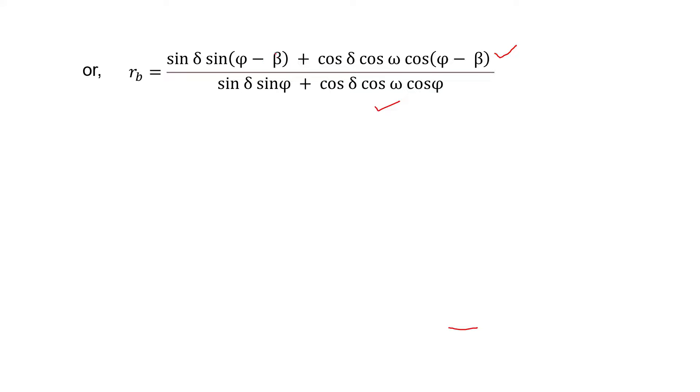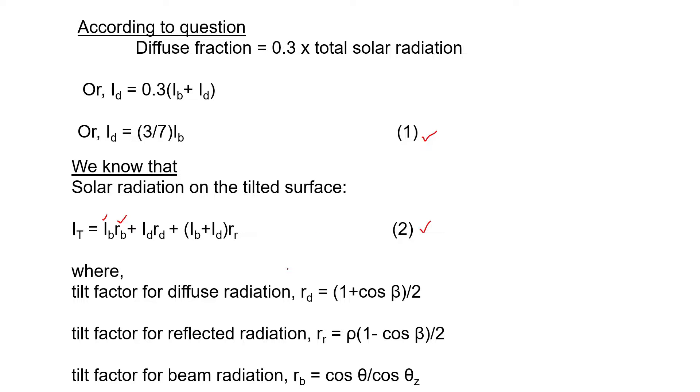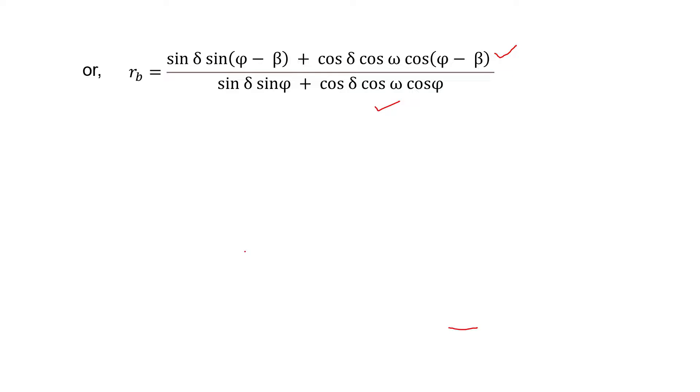When we put beta equal to 0 in this expression, we will get the value of cos theta z, which is shown here. When we put beta equal to 0 in this expression, we will get cos theta z.